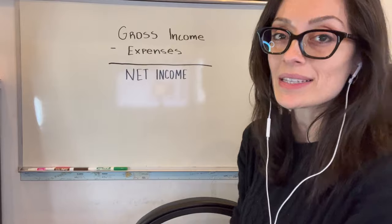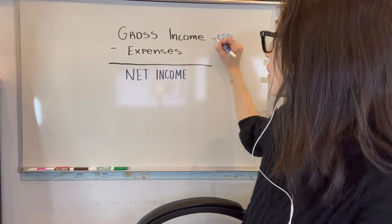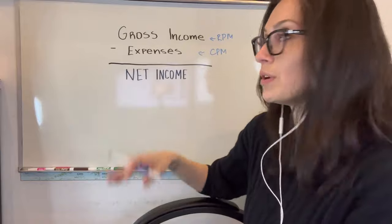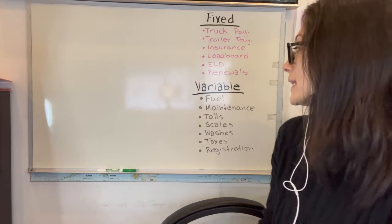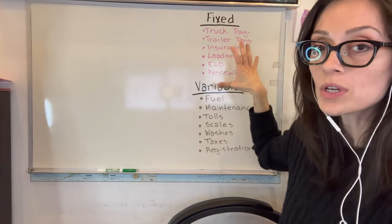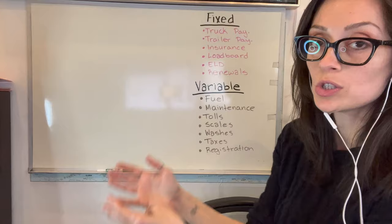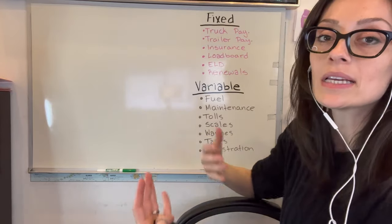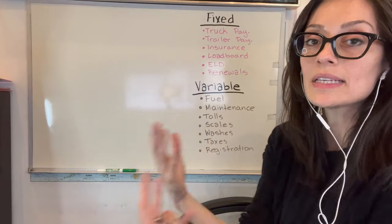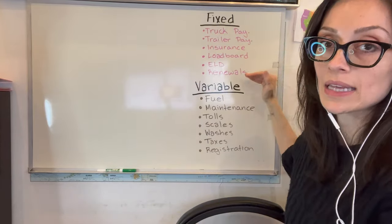Gross income minus expenses equals net income. We're going to look at it from the perspective of rate per mile, which is our gross income, versus cost per mile, which is our expenses, to figure out what our profit is — also known as net income. To calculate cost per mile, there are two main things you have to know: your fixed costs and your variable costs. Fixed costs are those costs that don't change no matter how many miles you run or how many hours you put into your job. For example: truck payments, trailer payments, insurance payments, renewals like BOC-3, UCR, IFTA decals, load board fees, and ELD fees. Whether your truck is running like crazy or parked in a yard, you have to pay these things no matter what.